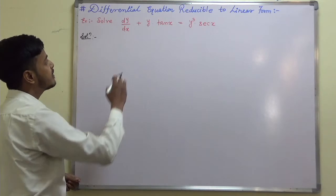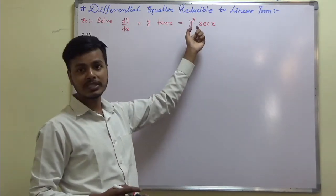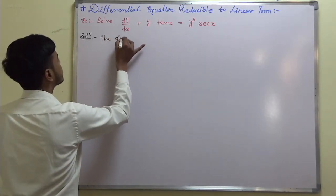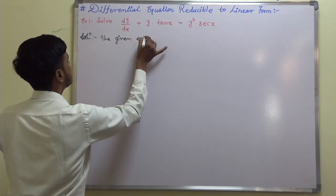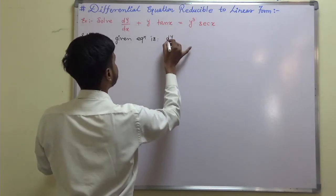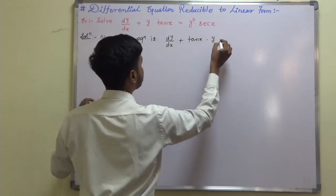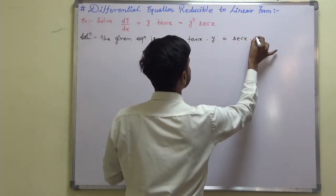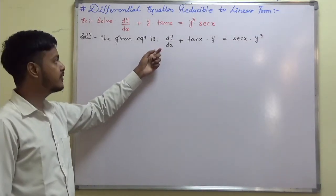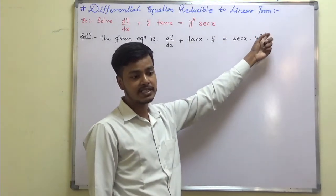The problem says: solve dy/dx plus y·tan(x) equals y³·sec(x). The given equation is dy/dx plus tan(x)·y equals sec(x)·y³. As you can see, this is a Bernoulli equation because there is an extra term of y to the power n, where n equals 3.